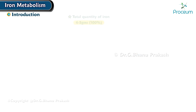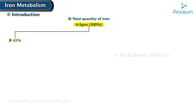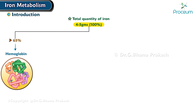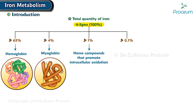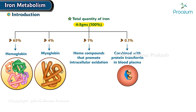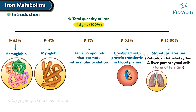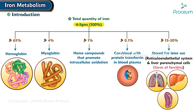The total quantity of iron in the body averages four to five grams. About 65% is in the form of hemoglobin, about 4% is in the form of myoglobin, 1% is in the form of various heme compounds that promote intracellular oxidation, 0.1% is combined with the protein transferrin in the blood plasma, and 15 to 30% is stored for later use mainly in the reticuloendothelial system and liver parenchymal cells, principally in the form of ferritin.